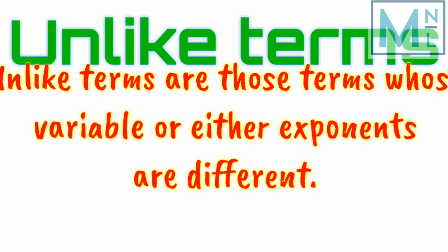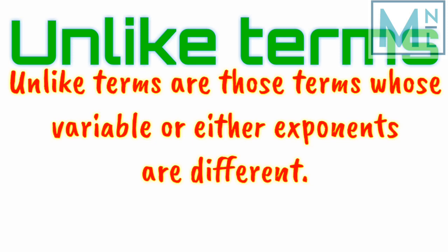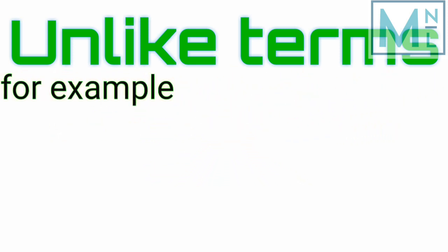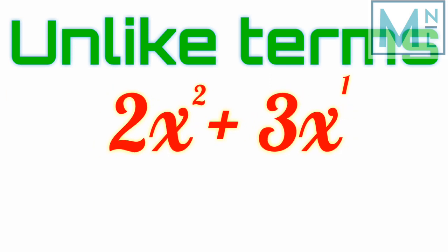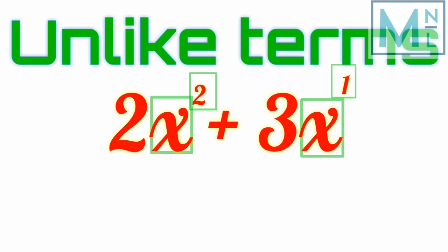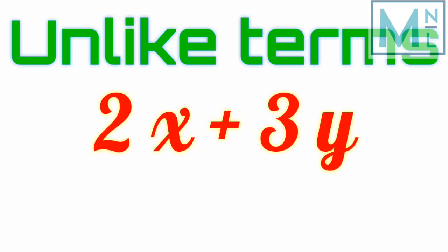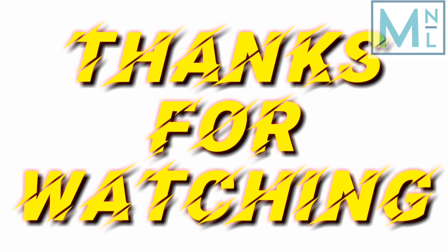Unlike terms are terms in which the variable or the power is not the same. For example, 2x² plus 3x — the first term has x with power 2 and the second term has x with power 1; the variable is the same but the exponents are different, so these are unlike terms. Another example: 2x plus 3y — the power is the same (1) but the variables are different, so these are also unlike terms.